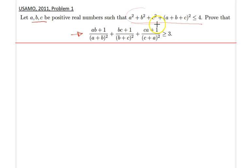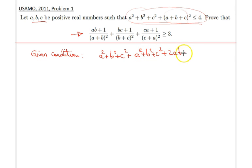So let's start with the given inequality. In fact, I will just go ahead and take the square of this term over here. So therefore, the given condition is that a squared plus b squared plus c squared plus a squared plus b squared plus c squared plus 2ab plus 2bc plus 2ca, less than or equal to 4.